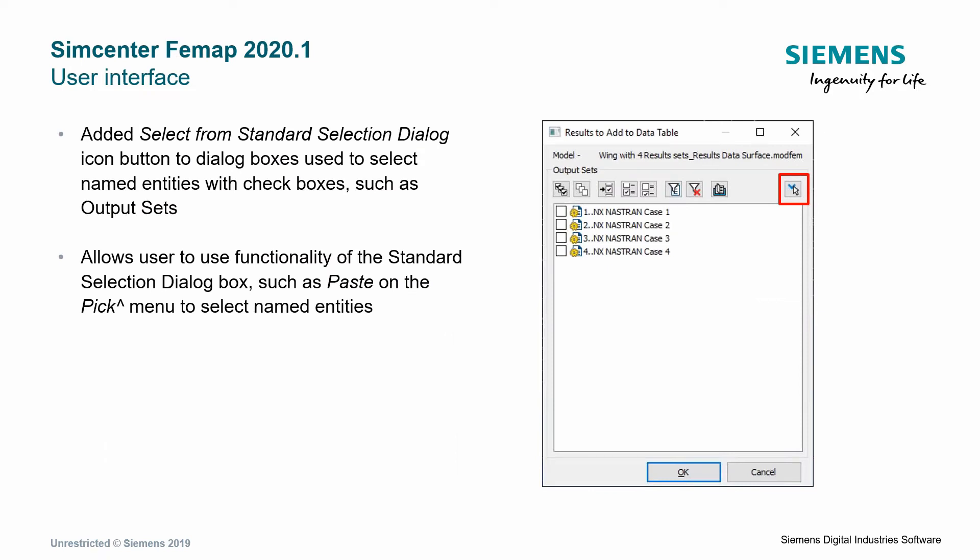Here's another user interface change when you're selecting results by checkbox. There's a box on the right-hand side of the dialog that allows you to paste in a list — similar to how you can paste in a list of elements if you have them copied. Now you can do the same thing when selecting checkboxes for results or analysis cases. I'll show you this functionality in a demo — it's pretty helpful.